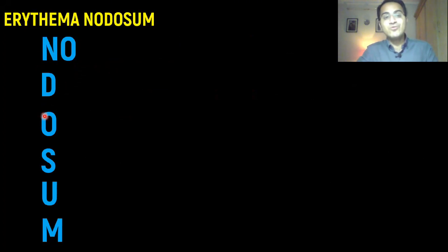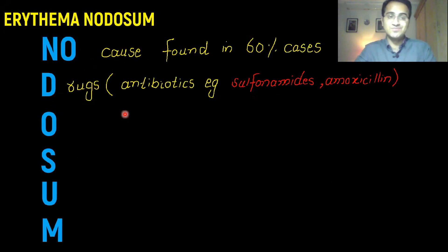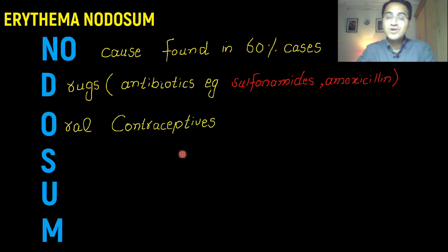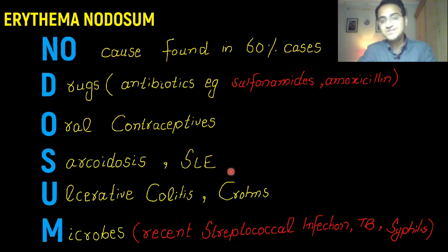The causes of erythema nodosum can be remembered by the mnemonic NODOSUM. N — no cause found in 60% of cases; you are unable to find the secondary cause. D — drugs: antibiotics like sulfonamides and amoxicillin can cause it. O — oral contraceptives can also cause erythema nodosum.